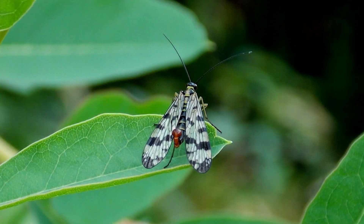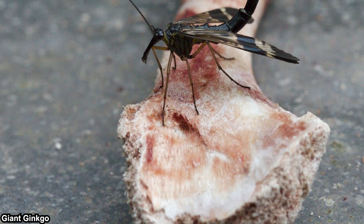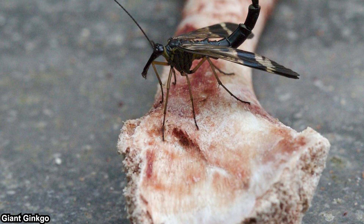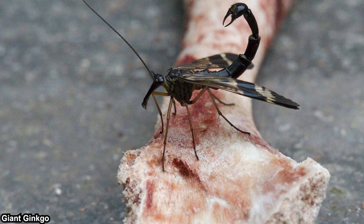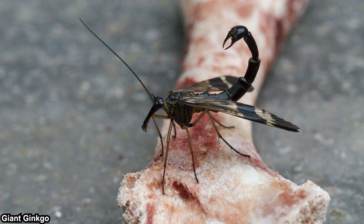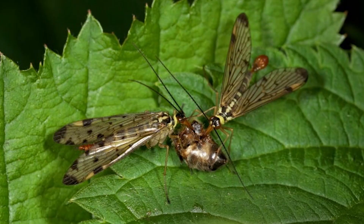Scorpion flies generally prefer cool and humid woodlands. Adults are mostly scavengers — they eat dead invertebrates but also decaying plant materials. Because they are scavengers, they are often seen on decaying carcasses, including human remains. This is why in some areas, the presence of scorpion flies can be an important clue in bioforensics, mostly to determine how long a corpse has been decaying.